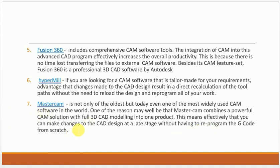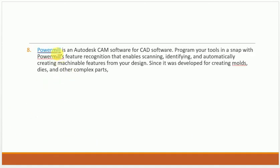The last one is PowerMILL. PowerMILL is also a plug-in type, associated with a few specific CAD software packages. It scans, identifies features, and automatically creates machining parameters. It has been developed particularly for complex parts such as turbines and other intricate components.